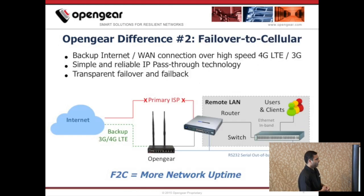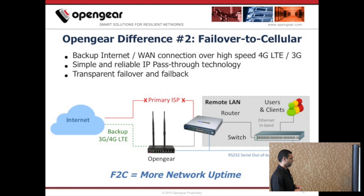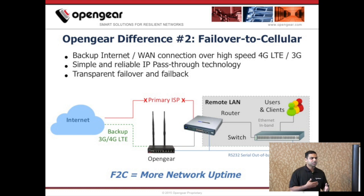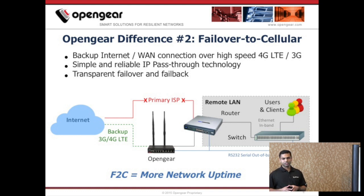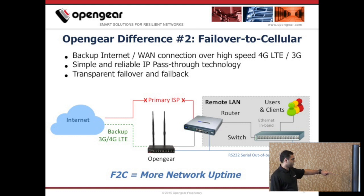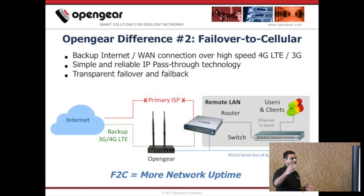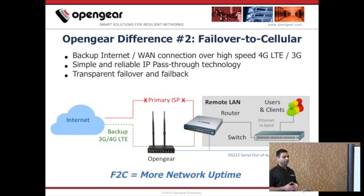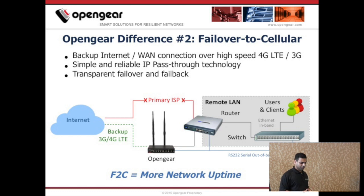The second big differentiator is failover to cellular. Many of our products come embedded with 3G and 4G cellular. We were the pioneers of introducing cellular in the out-of-band field. As more and more customers started using this feature, they asked: can we use this cellular connectivity as a backup internet connection, especially at remote sites? And that's exactly what failover to cellular is. If you have a router deployed at a remote site, that router can use the cellular connection on our products as a backup internet connection. Later in the presentation, Rob will demo this feature.